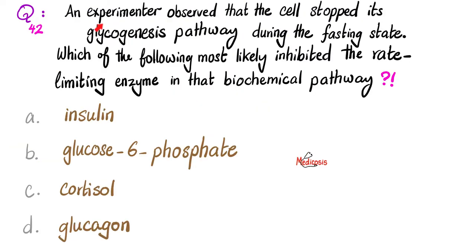Question 42. An experimenter observed that the cell stopped its glycogenesis pathway during the fasting state. Which of the following most likely inhibited the rate-limiting enzyme in that biochemical pathway? Was it insulin, glucose-6-phosphate, cortisol, or glucagon? Please pause.